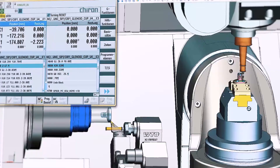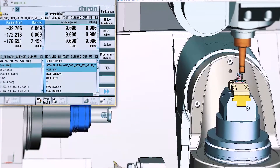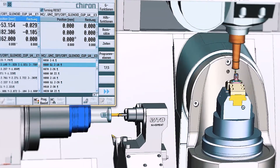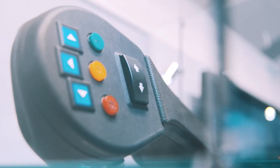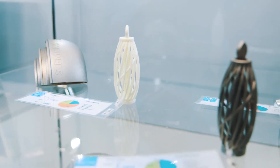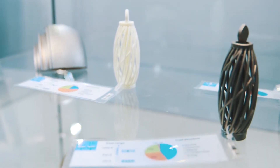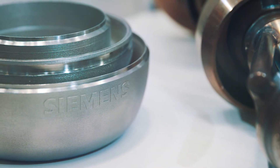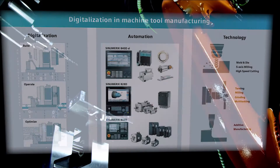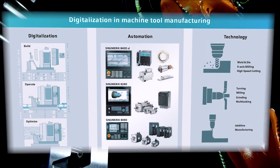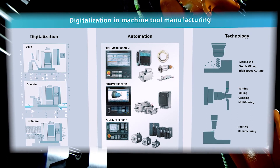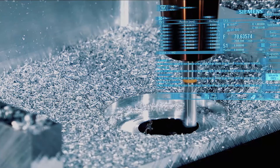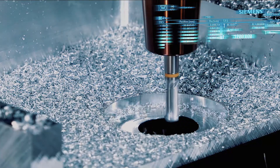Another good example is multi-tasking technologies such as mill turning or turn milling, or also our innovative concepts for additive manufacturing. This clear focus means we can offer digitalization in machine tool manufacturing as the complete solution to the manufacture of and production with machine tools.